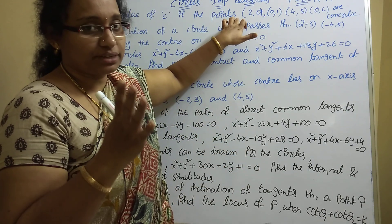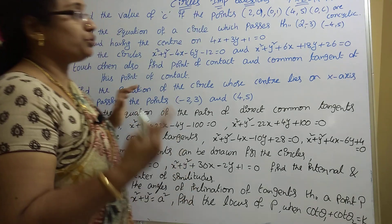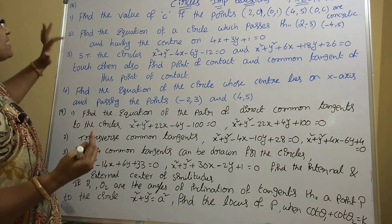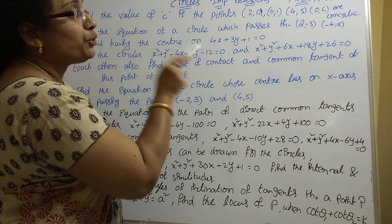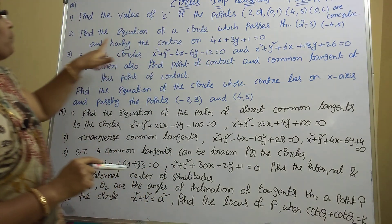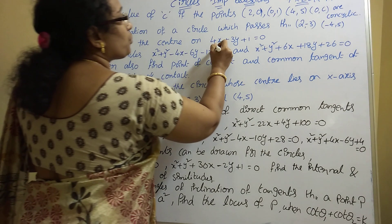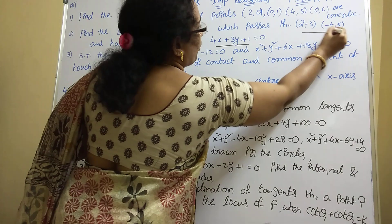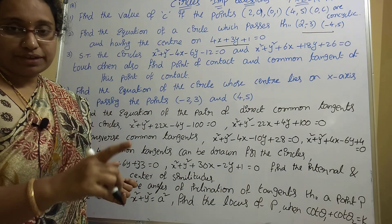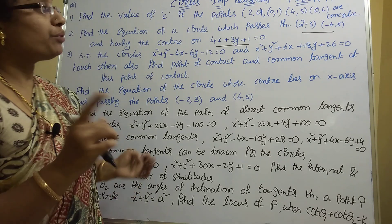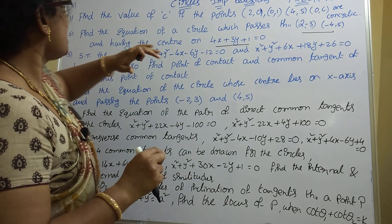There are three or four models — four sums total. Practice them and you'll finish in ten minutes. Second question: Find the equation of a circle which passes through (2, -3) and (-4, 5), and having the center on 4x + 3y + 1 = 0. Use the general equation x² + y² + 2gx + 2fy + c = 0. Apply each point to get one equation each.